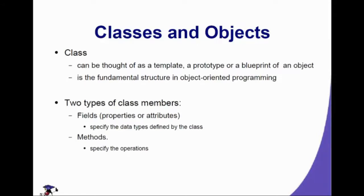A class can be thought of as a template, prototype, or blueprint of an object. It is the fundamental structure of object-oriented programming. When we create a class, we declare everything about it — its methods, properties, and attributes. We have two types of class members: fields and methods. Under fields, we have properties or attributes, which specify data types defined by the class. When declaring a class in Java, you declare the field at the top, just like declaring a variable.